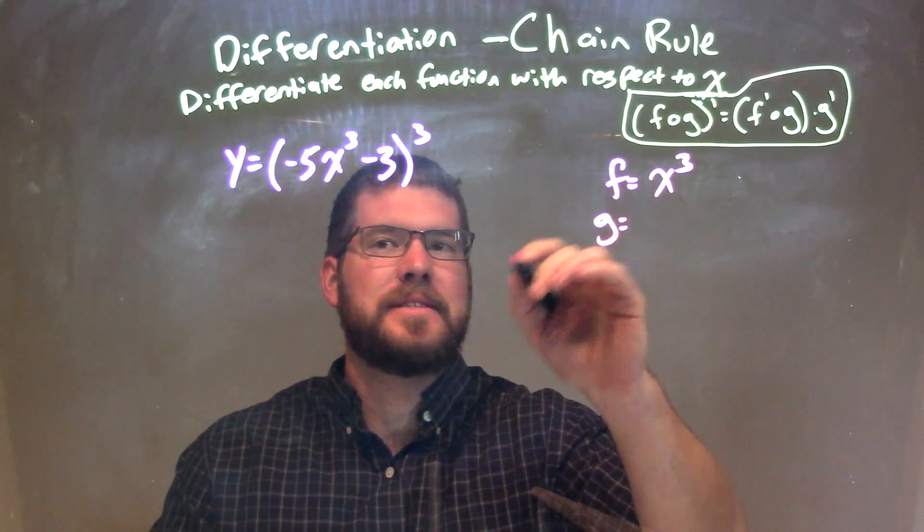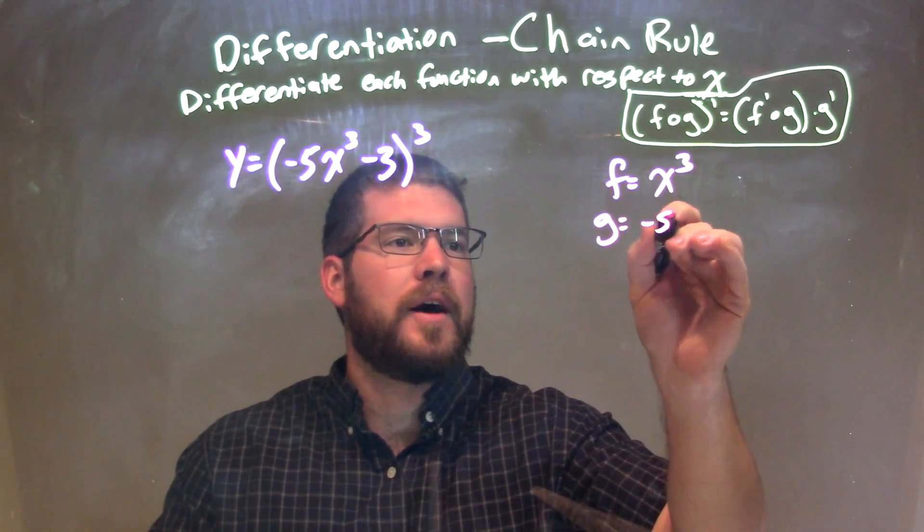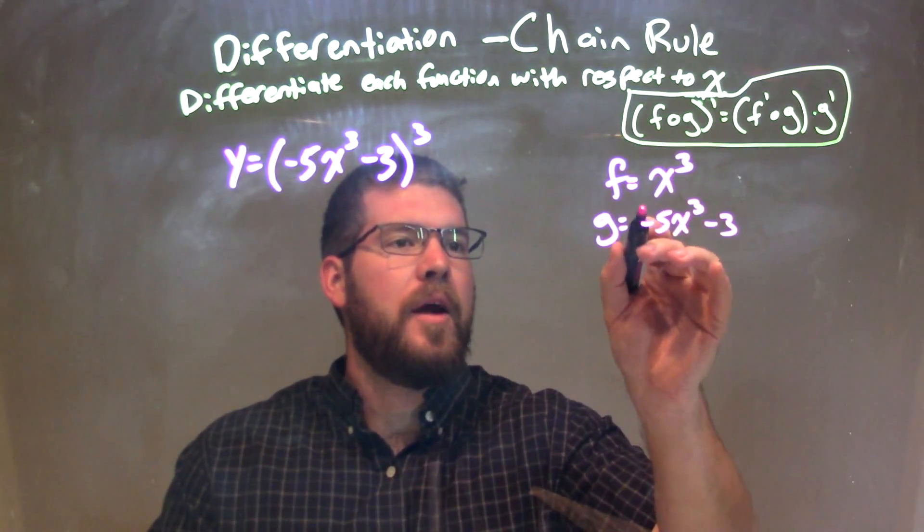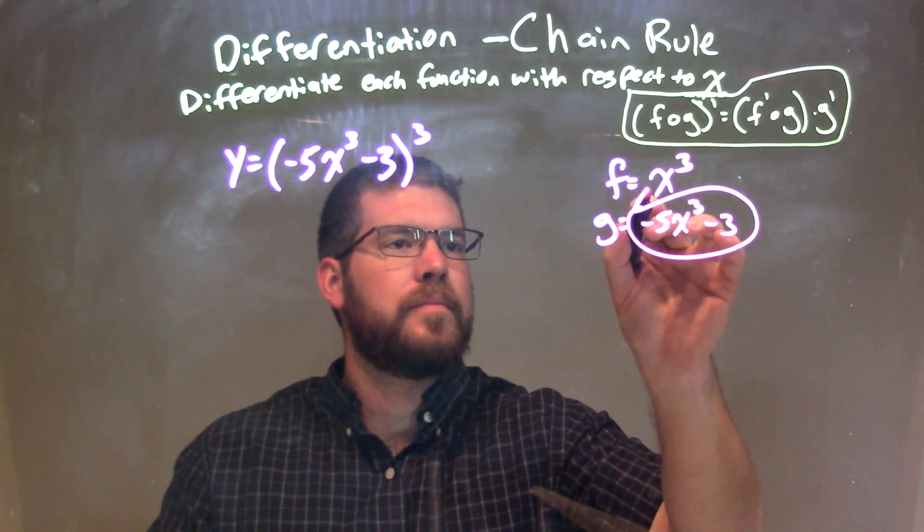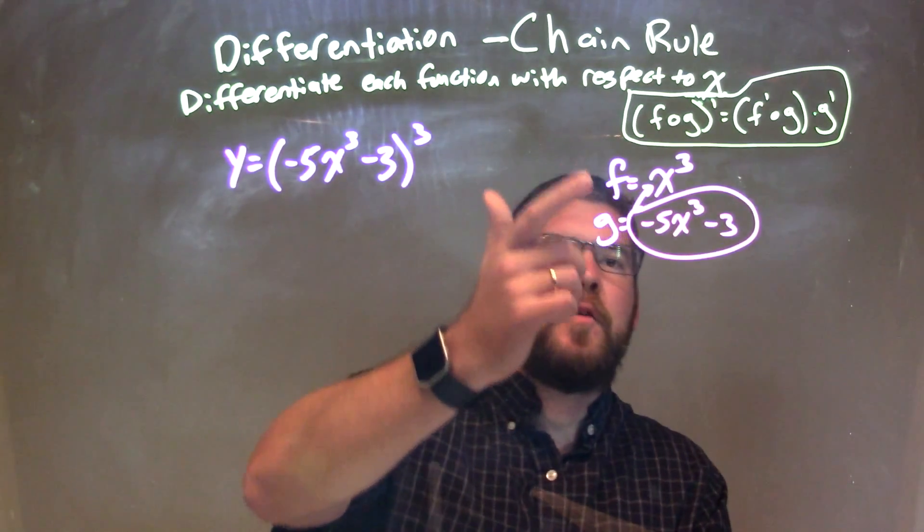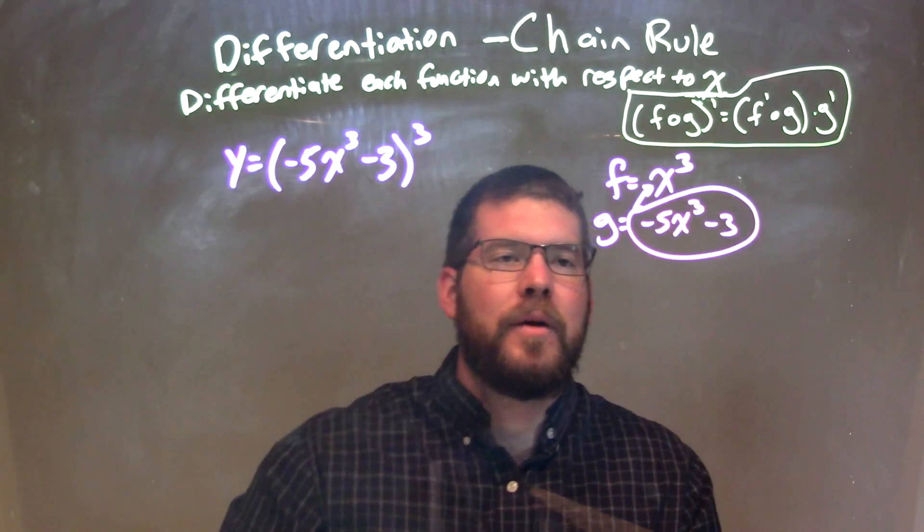And my g to be what's inside the parenthesis: negative 5x to the third minus 3. There I have my f of g. You can see right there, my f of g would get my original function.